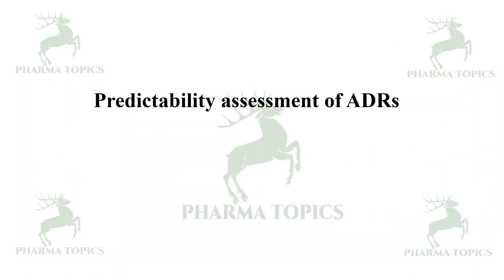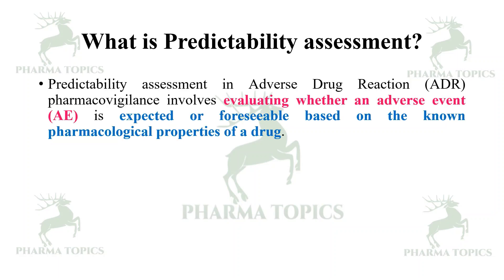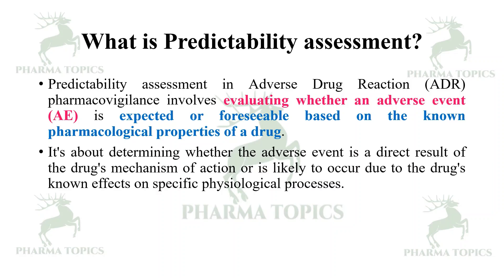Predictability assessment of ADRs: what is predictability assessment? Predictability assessment in pharmacovigilance involves evaluating whether an adverse event is expected or foreseeable based on the known pharmacological properties of the drug. It is about determining whether the adverse event is a direct result of the drug's mechanism of action or is likely to occur due to the drug's known effects on specific physiological processes.